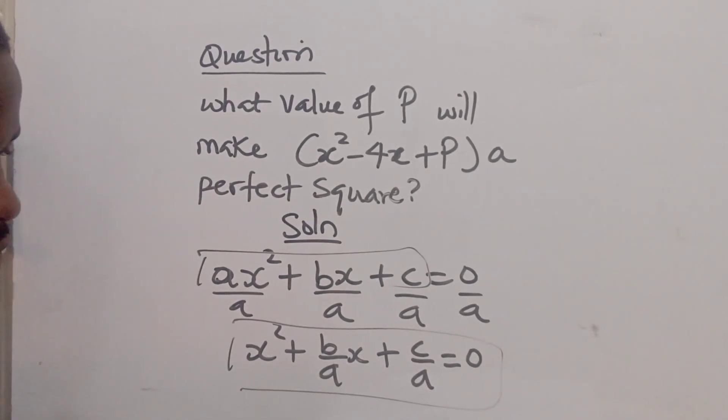Now when you are developing your general formula, what I popularly call the almighty formula in quadratic, you observe that at this point you have to add half of this coefficient. You have to add to both sides, or when you take this to each side you have half of this.